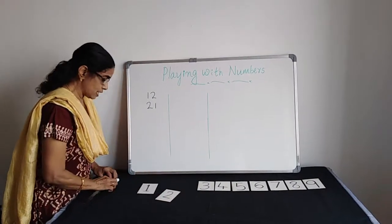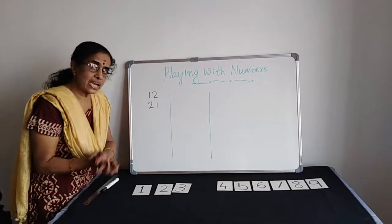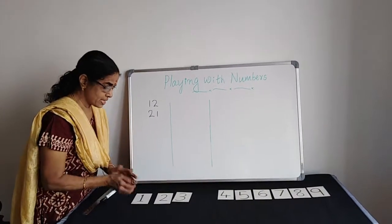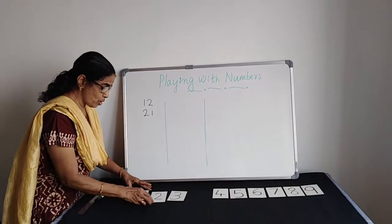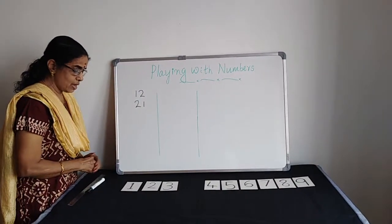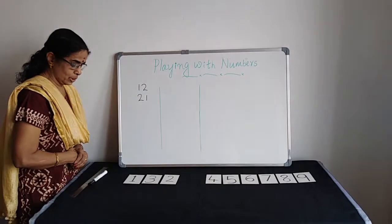Now we are going to take 3 numbers and we are going to make 3 digit numbers. Here also we are not supposed to repeat the digit. So first smallest number I am making, 123. Now 132.